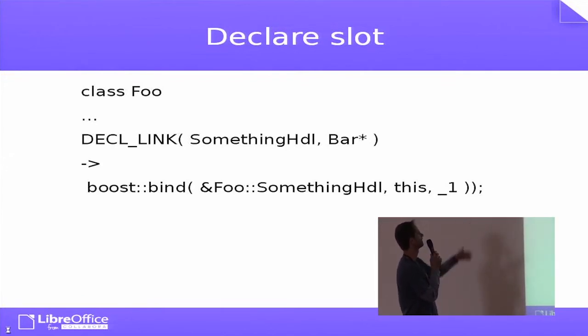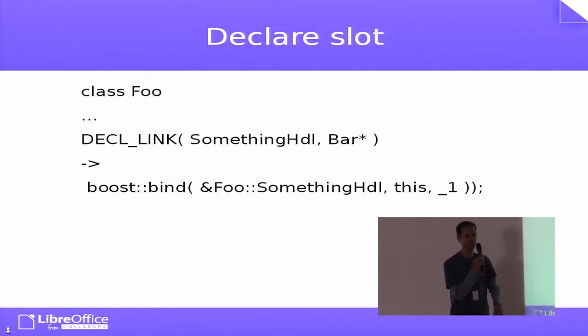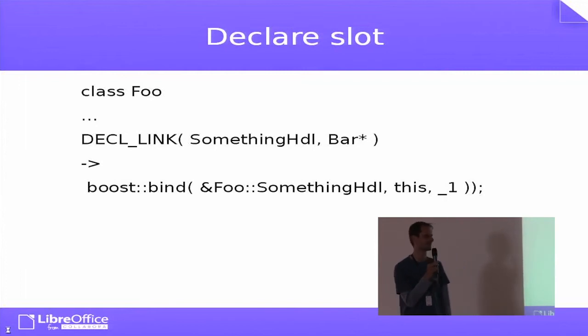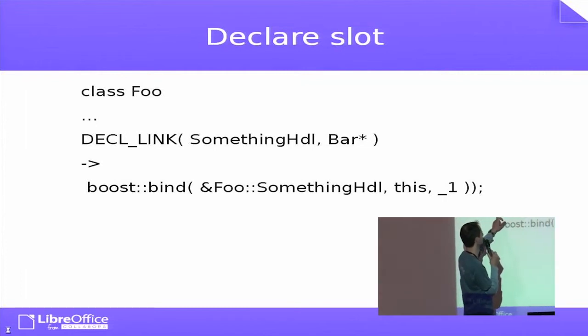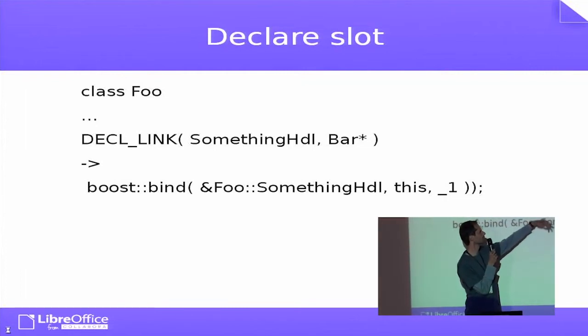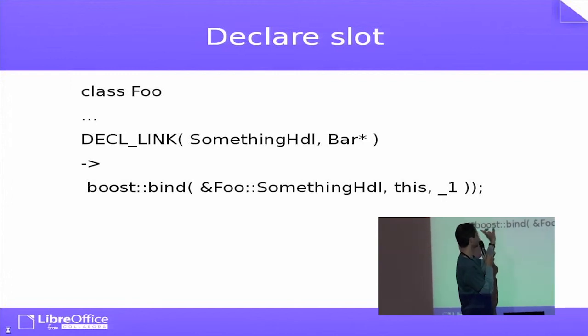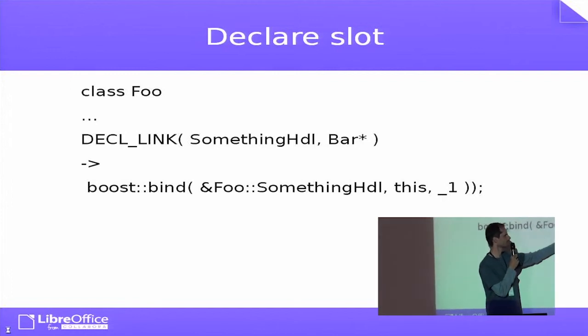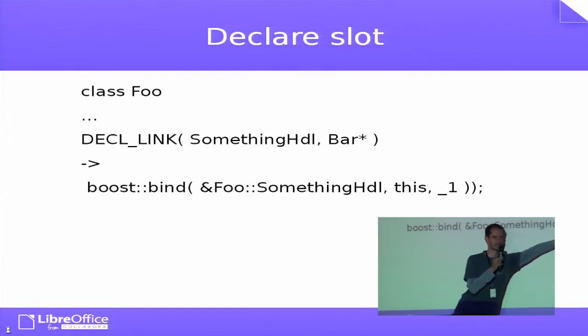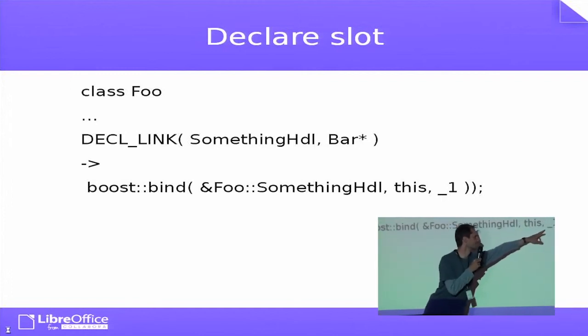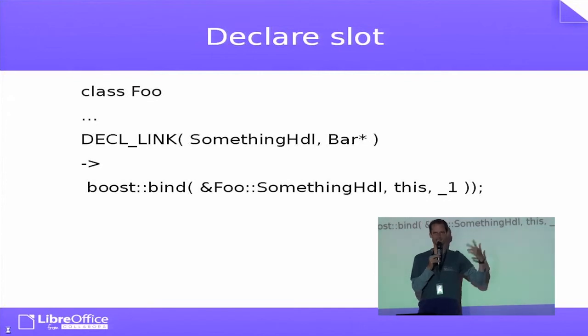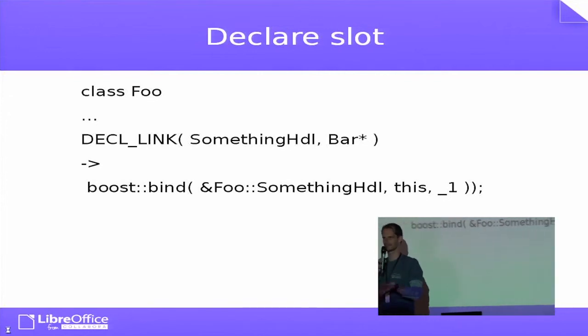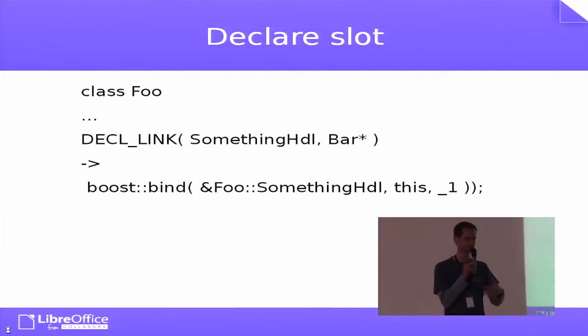This is how you connect it. Before, you had to use some set function and you use the macro. And since this is Boost, it's also not very readable—you have to do this complicated stuff. This basically means that this is the signal object and you connect it, and you need to use this bind stuff because it's a member function. The first argument is this, and this is underscore one. It means that as another argument, you will get the first argument from the signal.